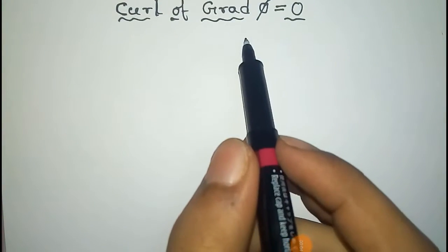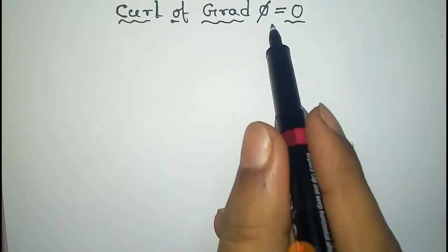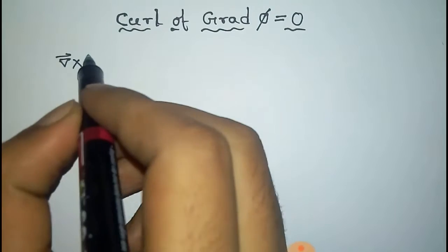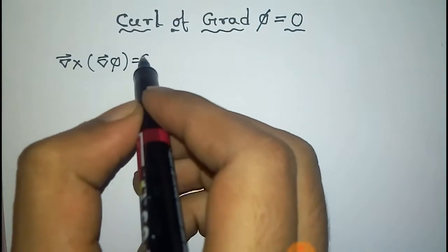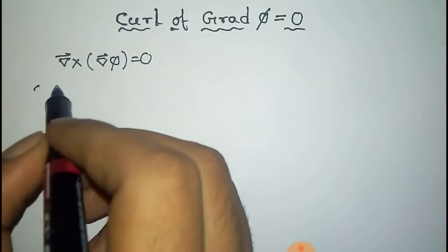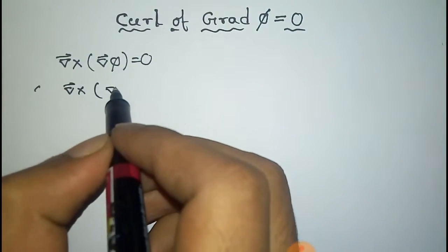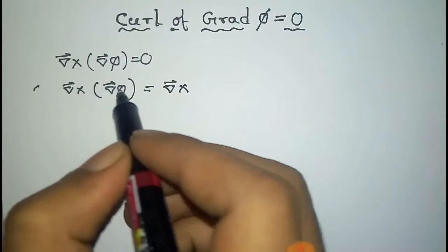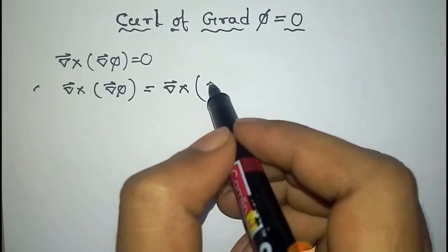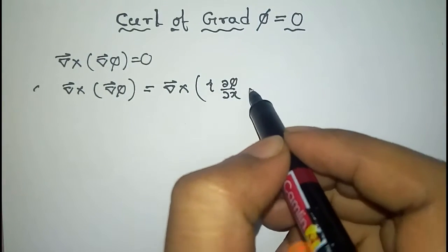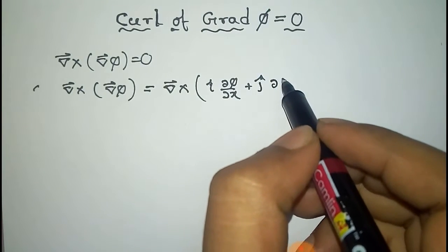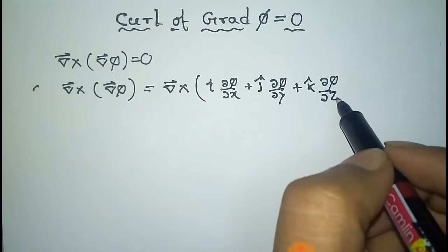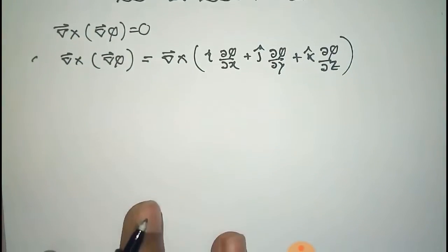We have to prove that curl of gradient is 0, where phi is the scalar. We need to prove that curl of grad phi equals 0. Curl of grad phi can be written as curl of grad phi, where the value of grad phi is given by i-cap del phi/del x plus j-cap del phi/del y plus k-cap del phi/del z.